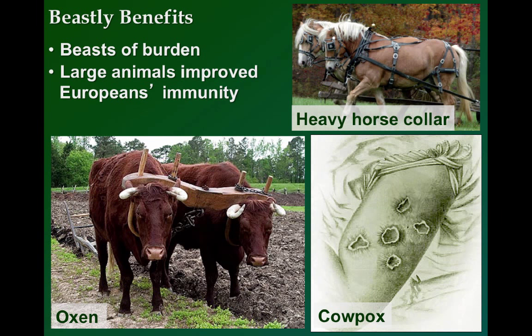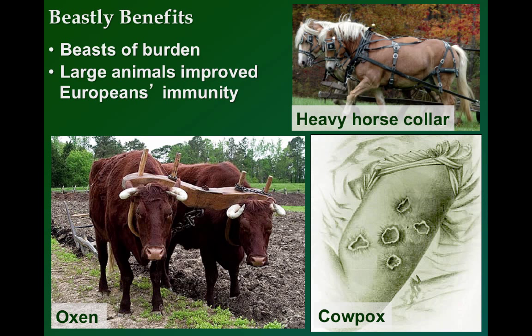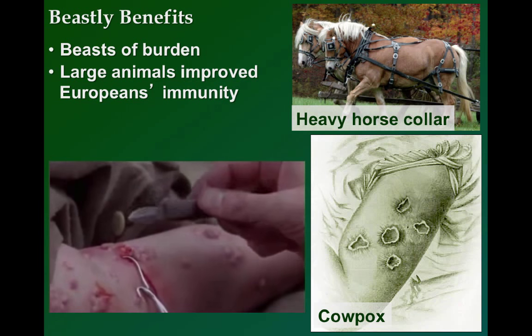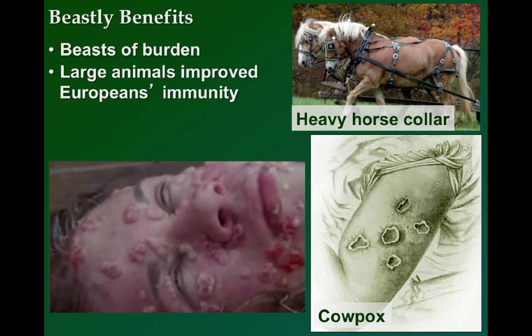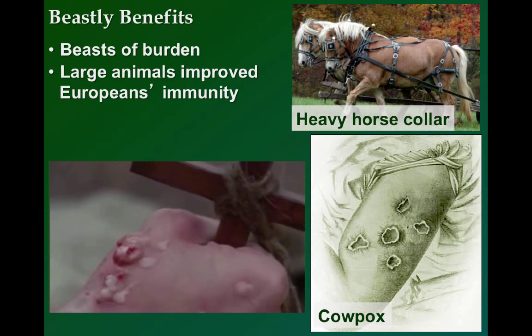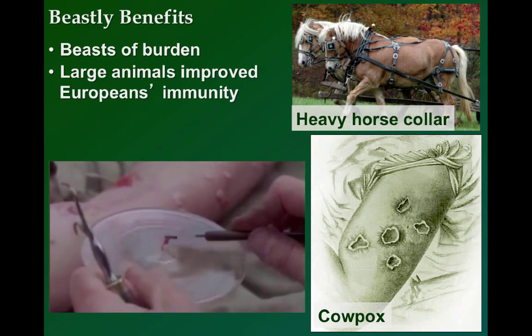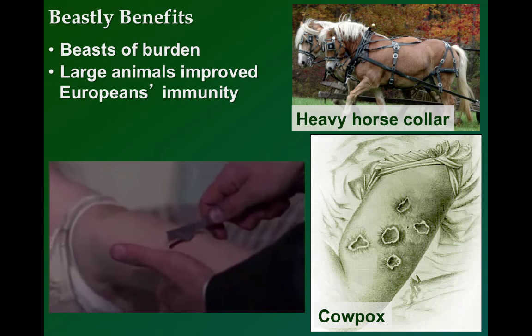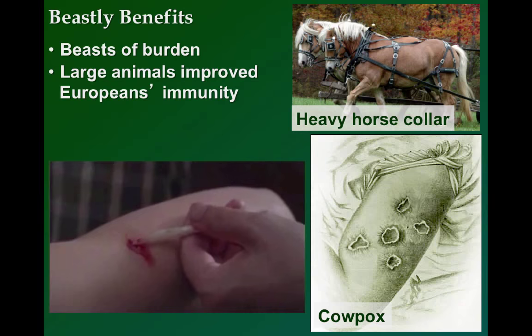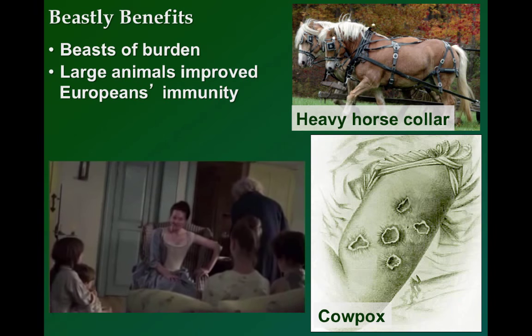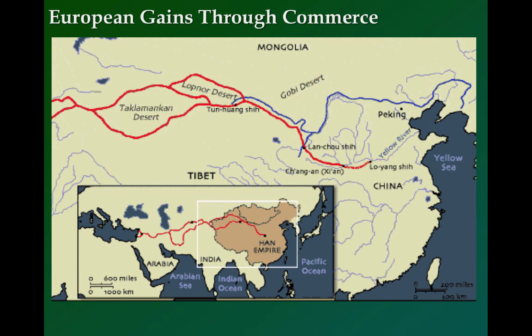And over time, perhaps one of the greatest — and unintended — benefits helped the Europeans as they developed an improved immunity towards disease. Since large mammals and humans have somewhat similar circulation systems, diseases can be more easily transferred between them. Many people died from animal-borne diseases such as the plague or influenza, or cowpox. And those who survived passed their immunity onto the next generation.